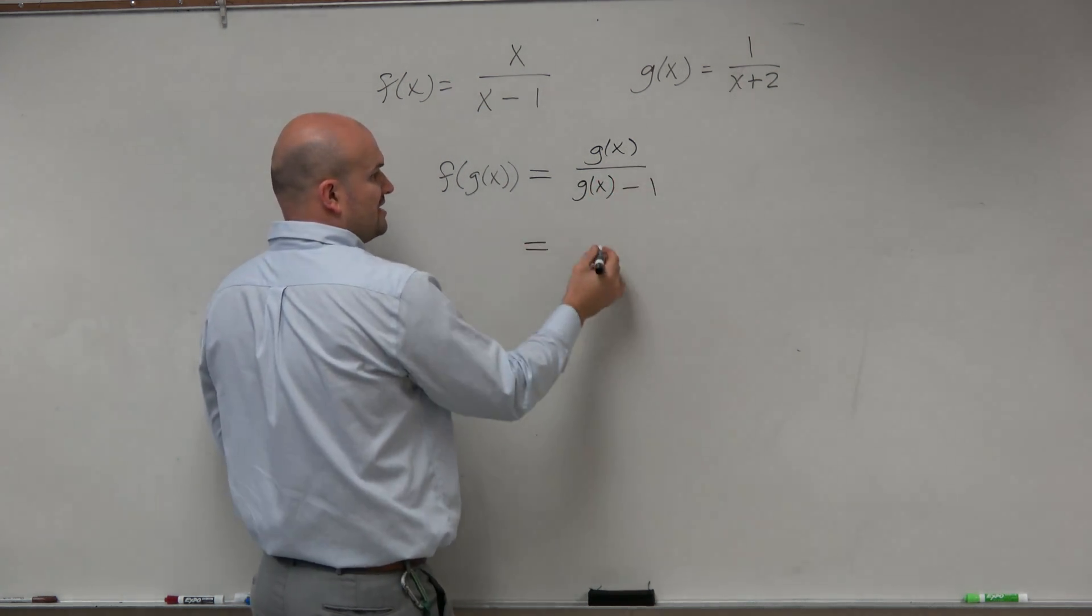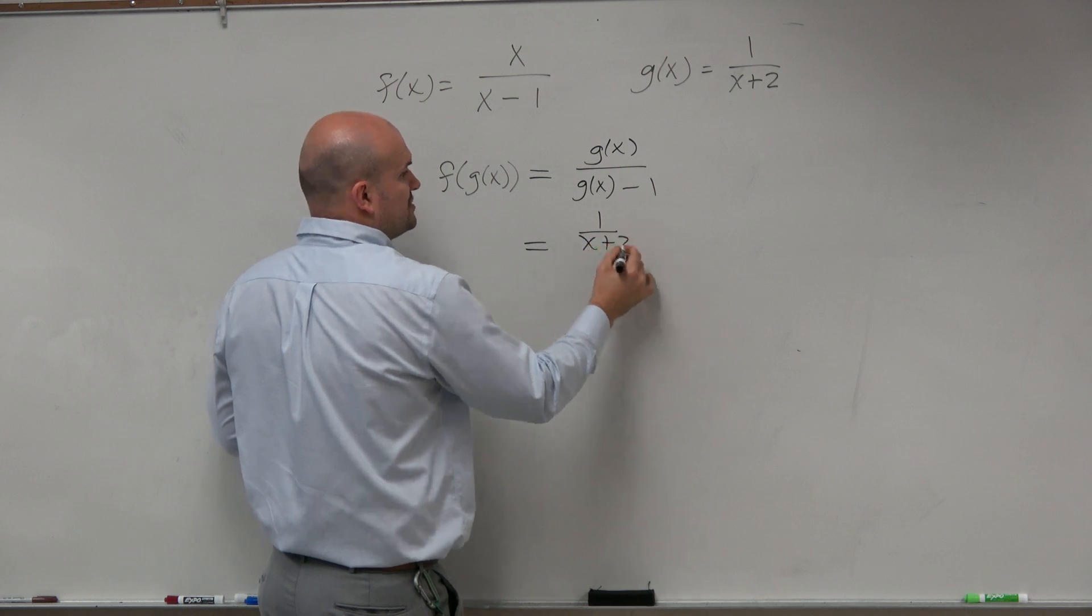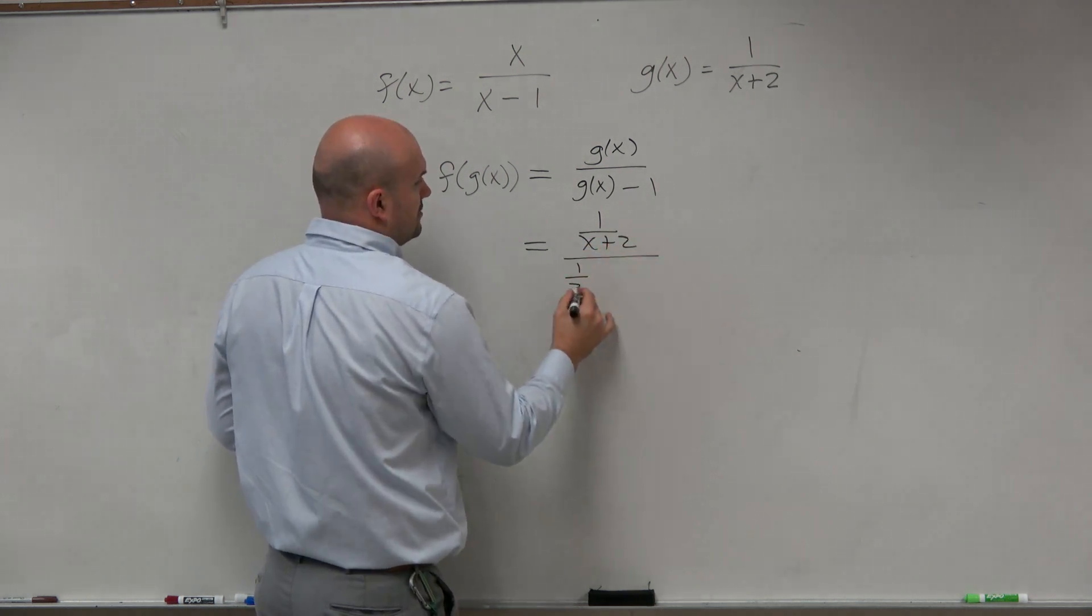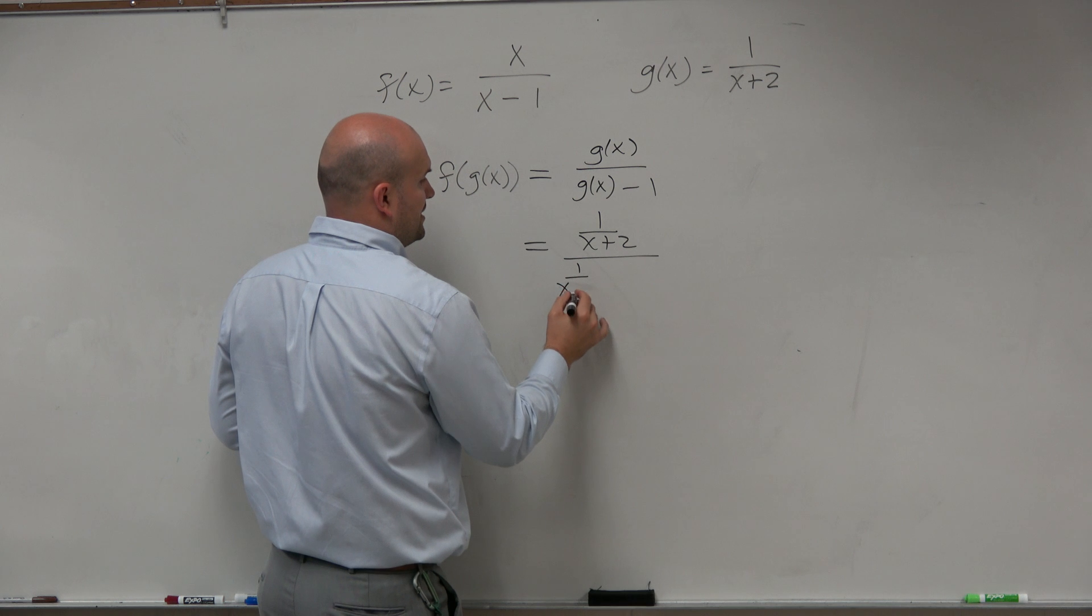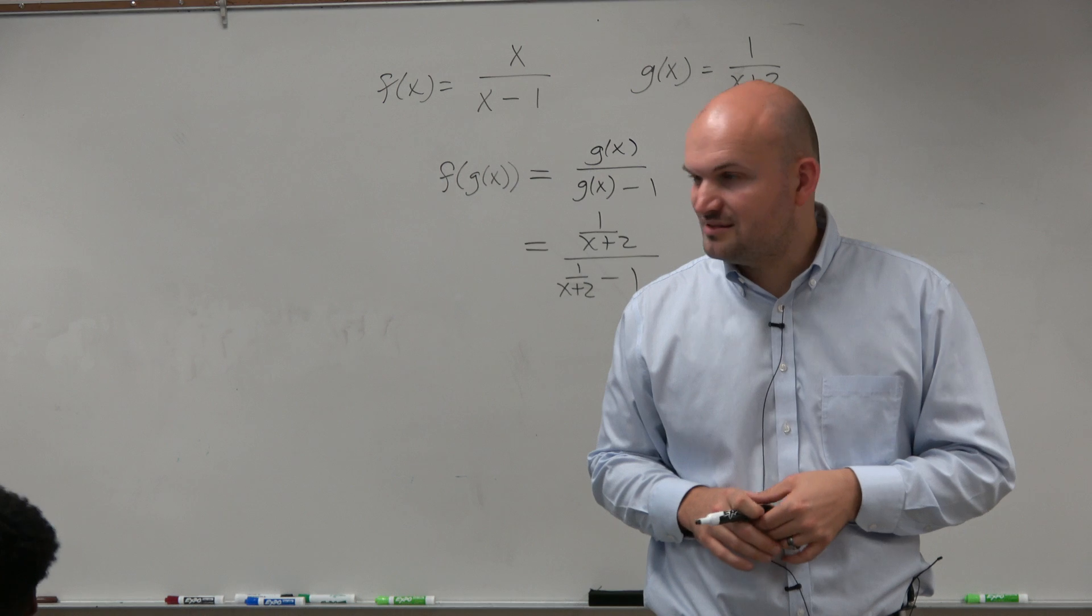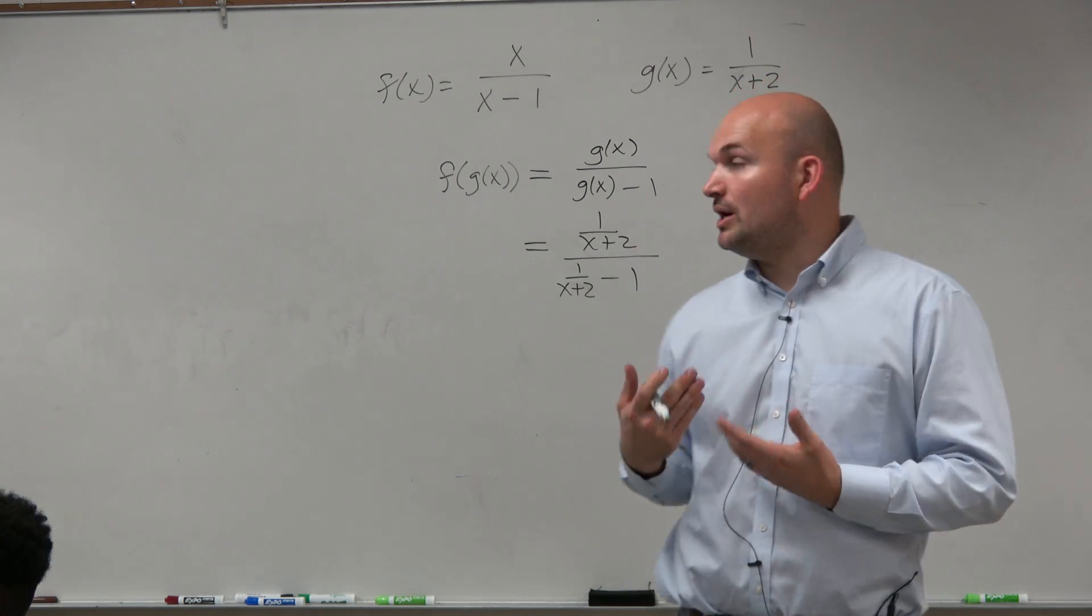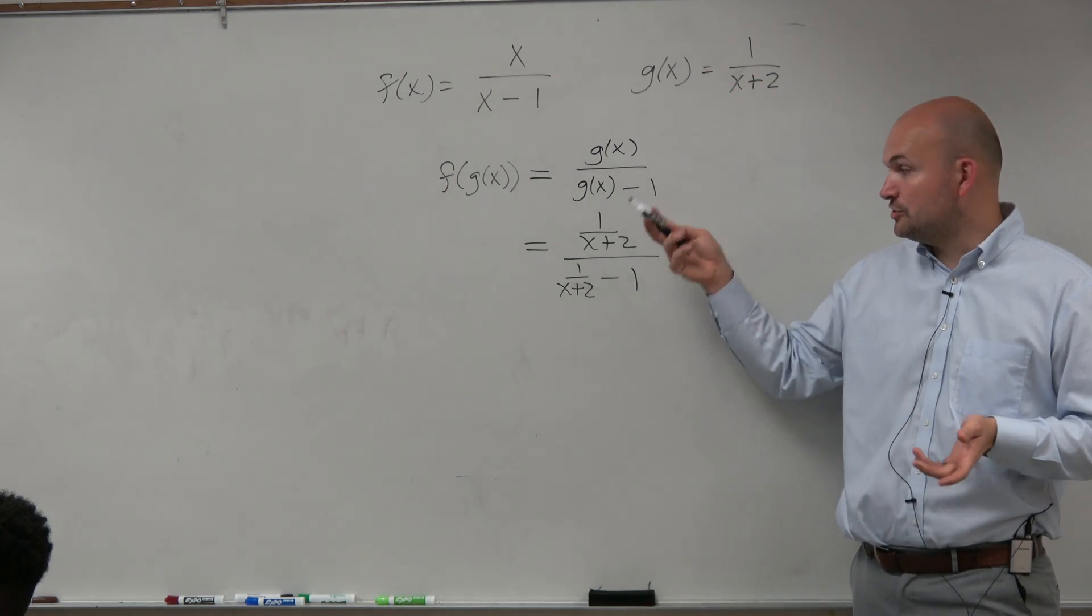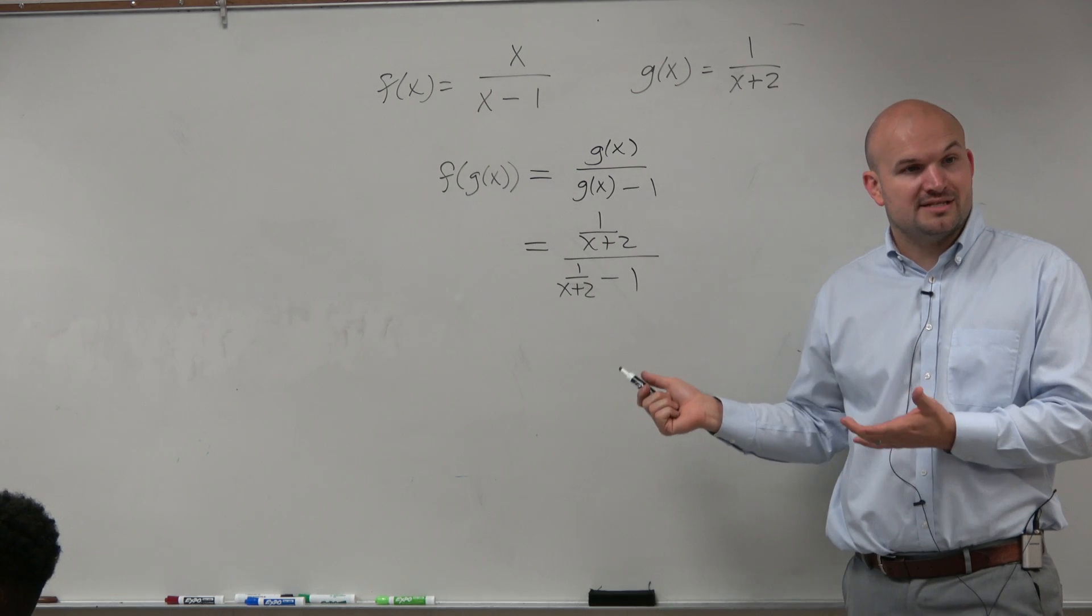Now, this isn't that fun because we have rational expressions in the numerator and in the denominator, right? Doesn't look fun at all. This is what we call a complex fraction. When we have fractions in the numerator and the denominator, and we're separated by addition.